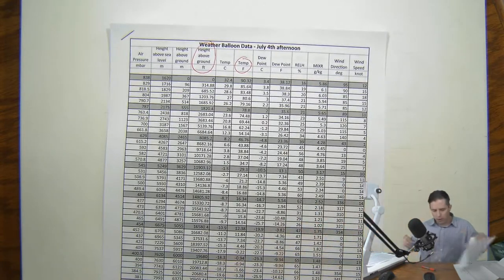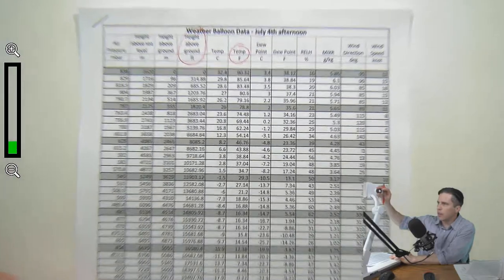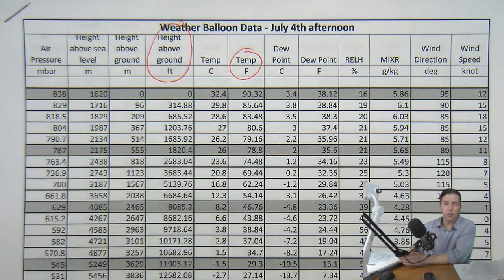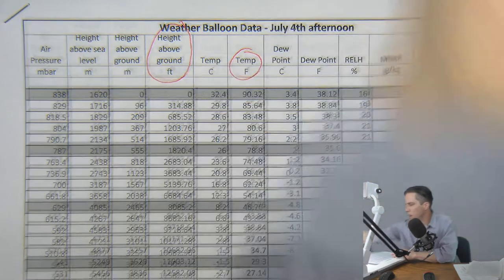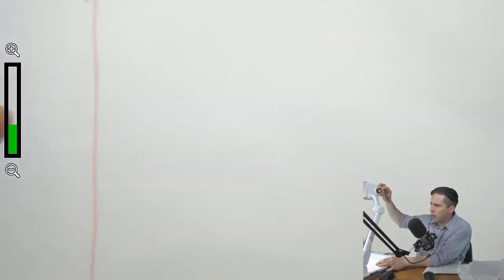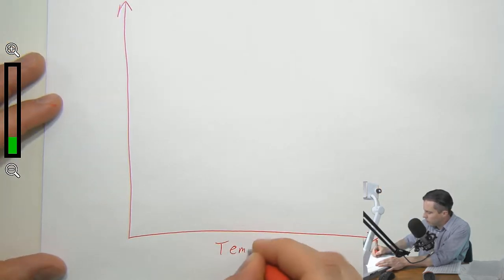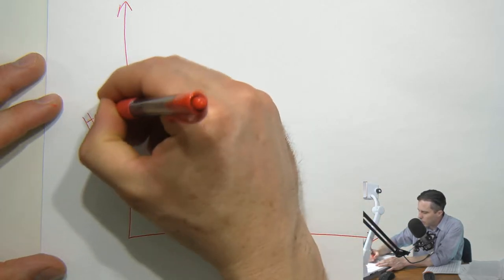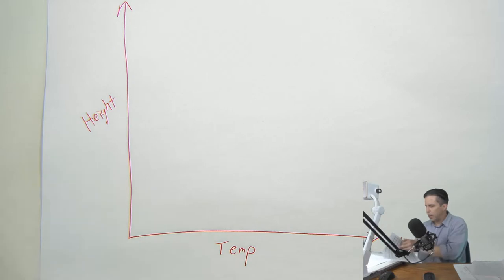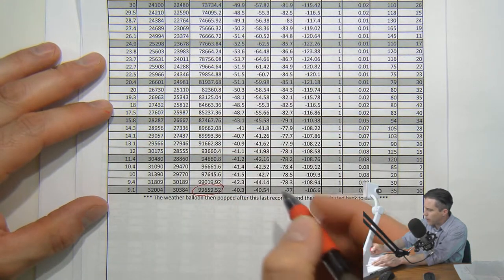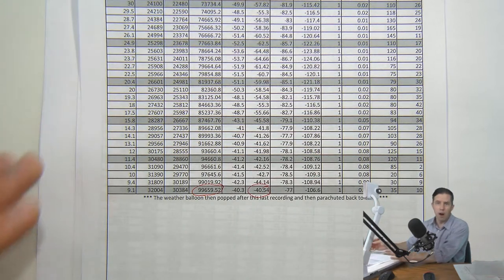Whatever paper you've got, you've got to figure out a scale. To figure out the scale, we need to know what kind of graph paper we have and then find the extremes in the data. We're going to plot temperature on the x-axis and height on the y-axis. This weather balloon went up to about 100,000 feet — looking at the last data point on the last page — and at 100,000 feet it was about minus 40 degrees. That's when the weather balloon pops and falls back to earth. So the height starts at zero and the last point is about 100,000 feet.